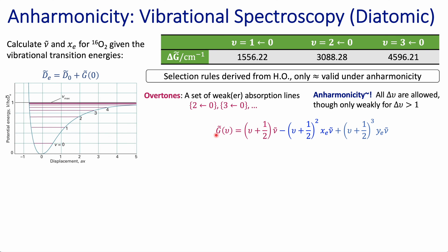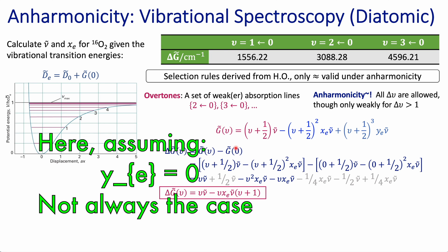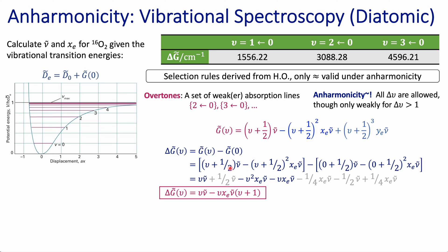So taking these expressions for the vibrational term, we can calculate what energy corresponds to these transitions. This one is what we call the fundamental transition, this one is the first overtone, and this one is the second overtone. If we're interested in the overtones, we take the expressions for the vibrational terms and calculate the change in energy, considering that the initial state is the ground state going to an excited vibrational state. We substitute: the initial energy level is always the ground state so the vibrational quantum number is zero. After doing the algebra and canceling terms, we find the expression for transitions starting from the ground state, where the vibrational quantum number corresponds to the final state. So delta G for zero to one is the fundamental transition, zero to two is the first overtone, and zero to three is the second overtone.